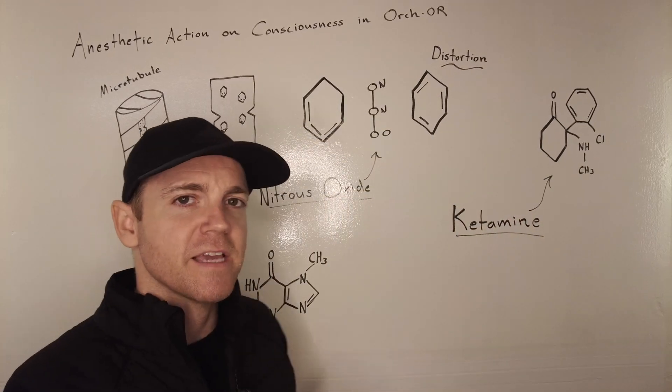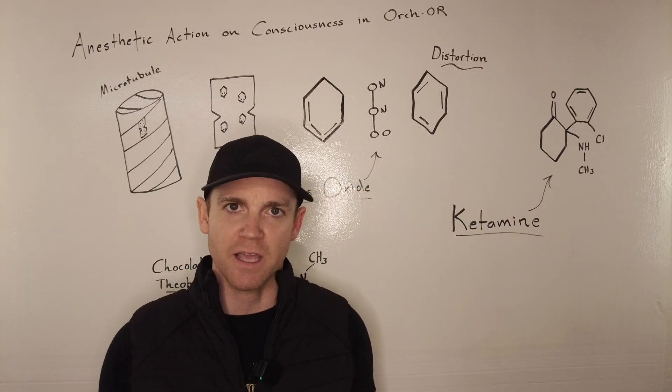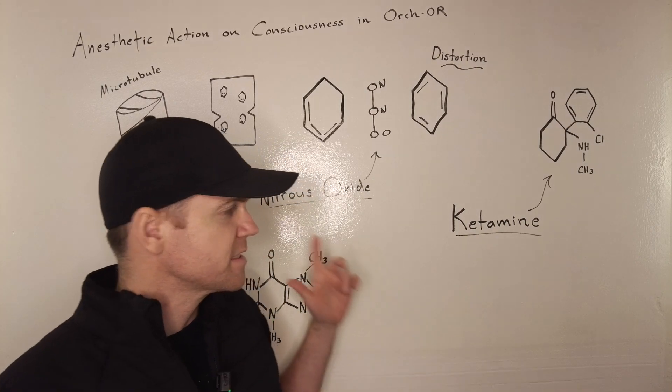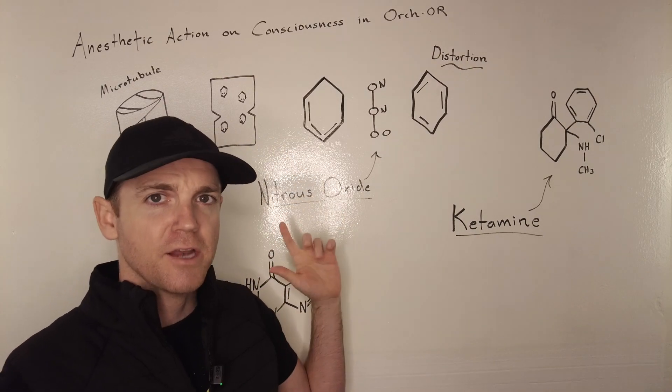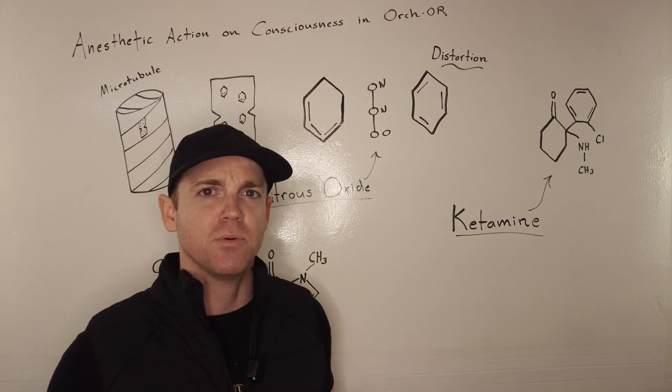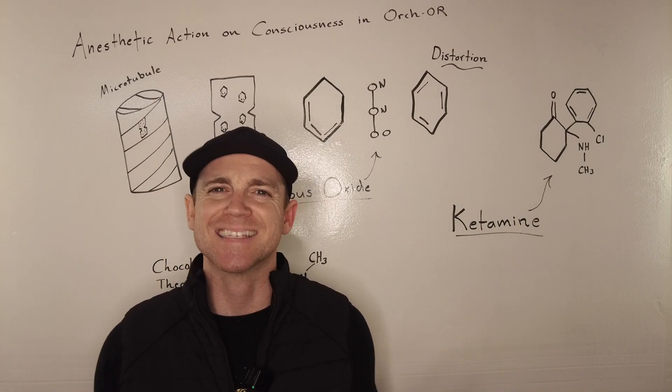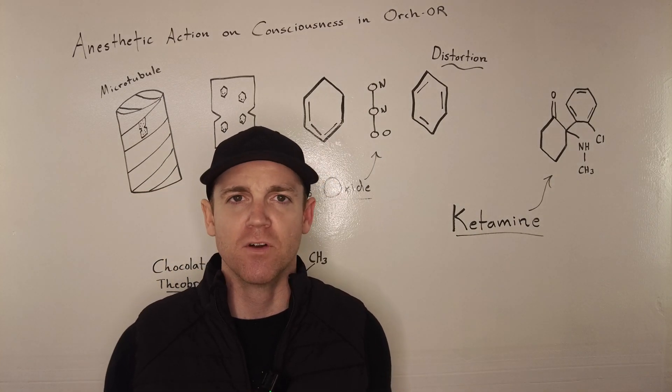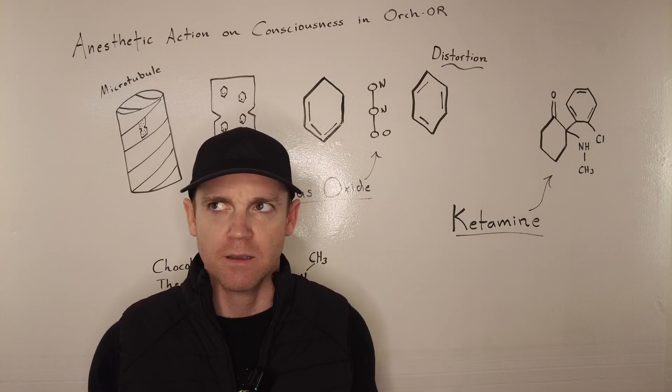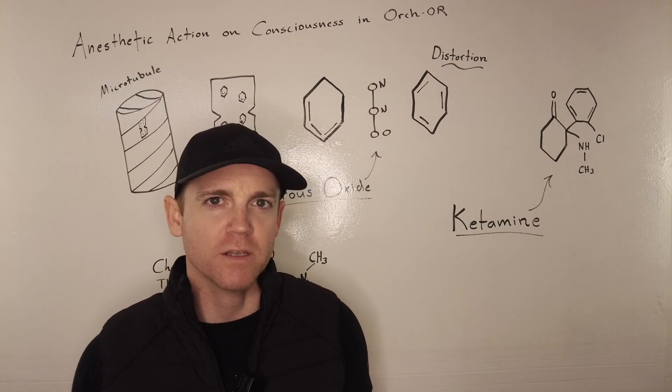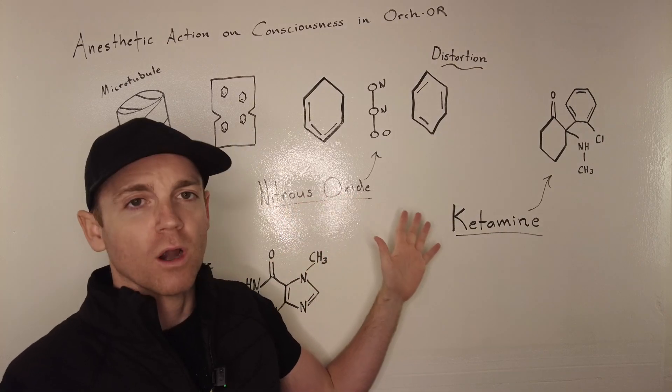So let's take something like nitrous oxide. Nitrous oxide's very simple. I think it was one of the first anesthetic gases that was ever manufactured. It was produced 200 something years ago at this point in time. So how does it work?